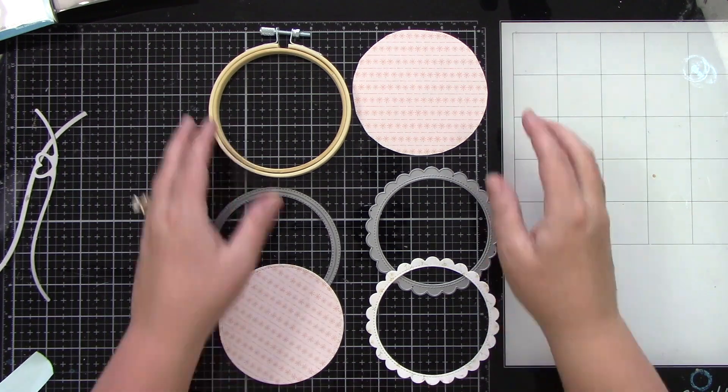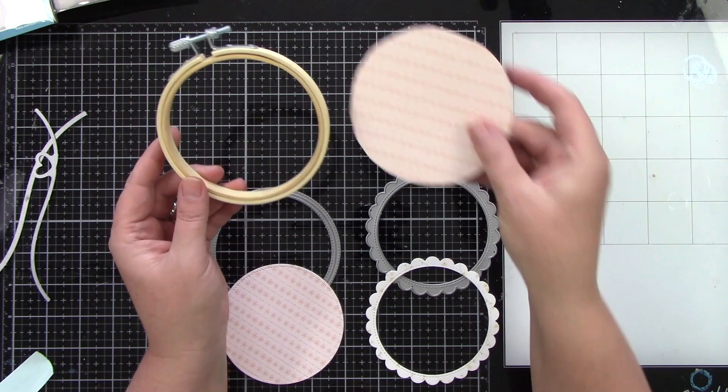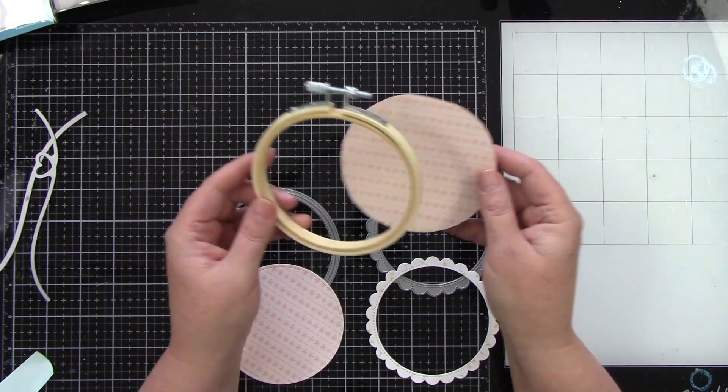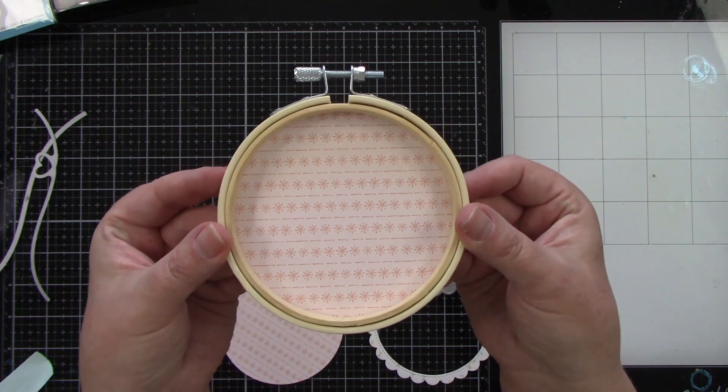I'm using an embroidery hoop. This is a four inch embroidery hoop and I trace it on some patterned paper and cut it out to fit the back of this so I can get an exact fit.